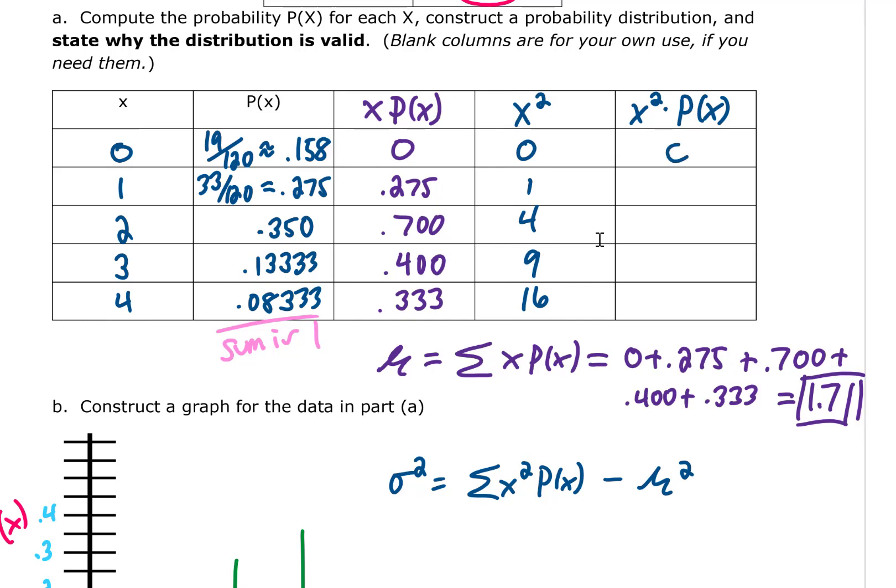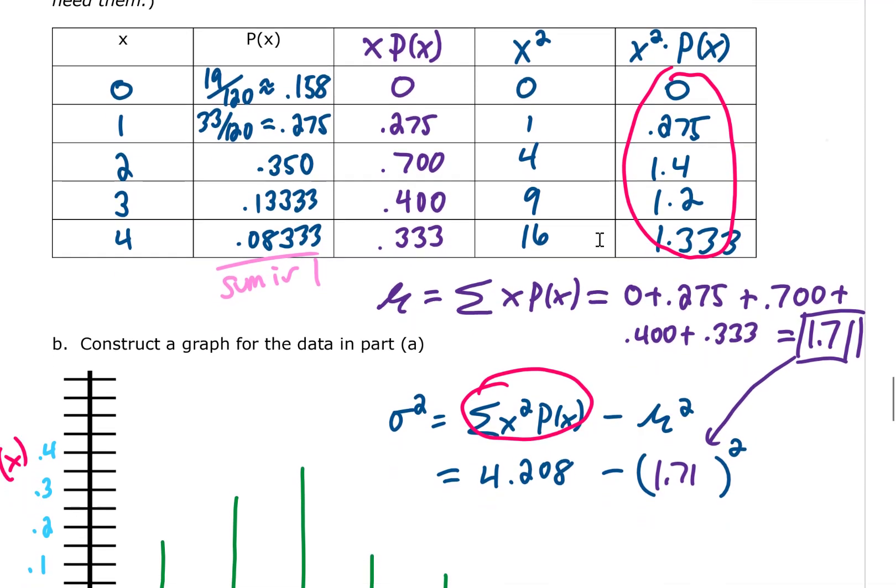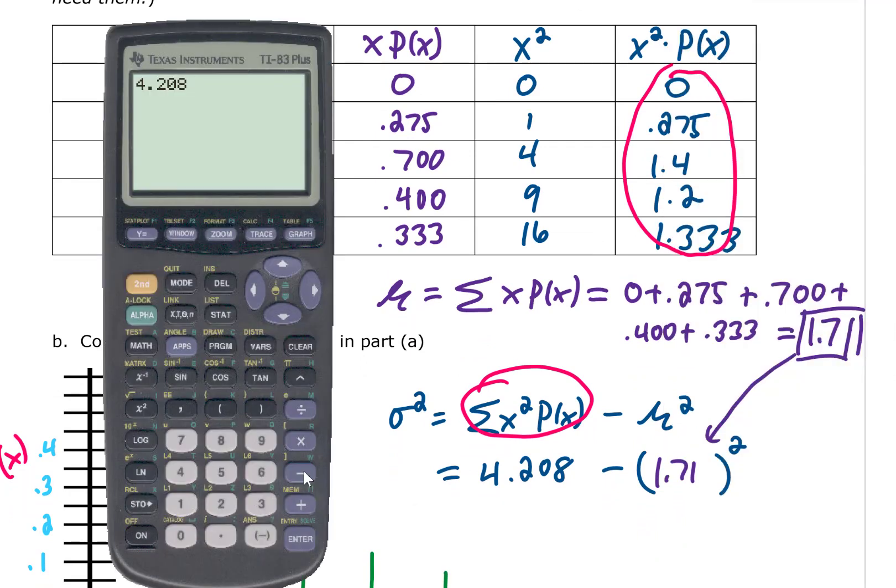If we take each one of these x squareds and multiply it by our probability: 0 times 0.158 is 0, 1 times 0.275, 4 times 0.35, 9 times 0.1333, and 16 times 0.08333. If we sum all of the values in this column, I'm getting that that number is 4.208. We're going to subtract from that the number that we got for our mean squared. If we take that 4.208 and subtract 1.71 squared, I'm getting that our variance is 1.28.